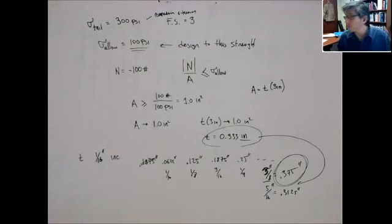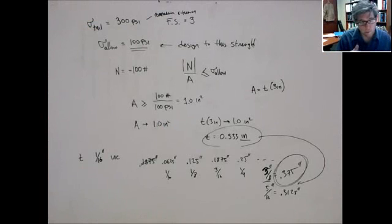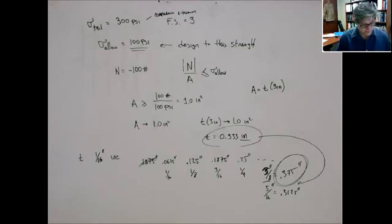Sometimes the more conservative value means the dimension gets smaller, sometimes it might be a bigger dimension. To figure that out, you want to go in the direction that makes it more conservative. That's all I want to say about that — it's a really simple concept but a huge one. We'll try to develop better operational procedure over time.